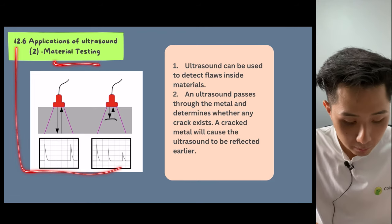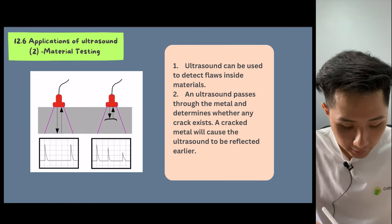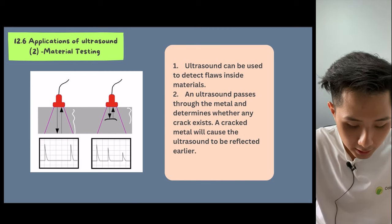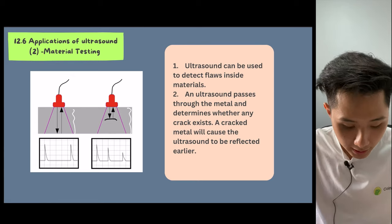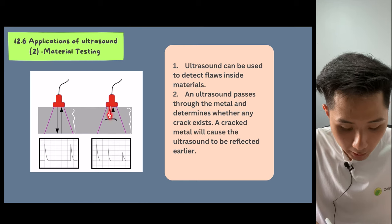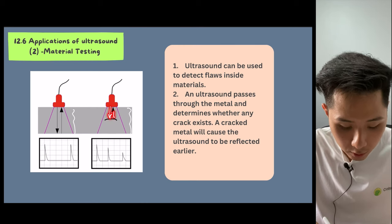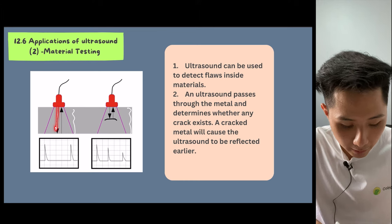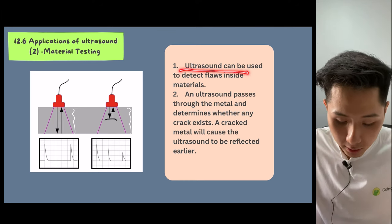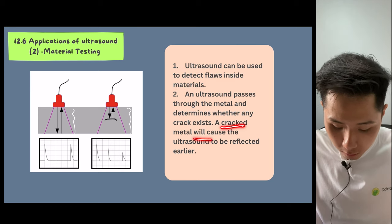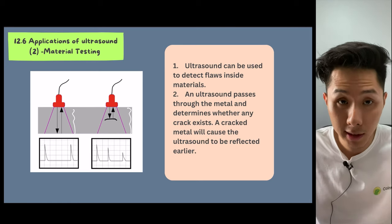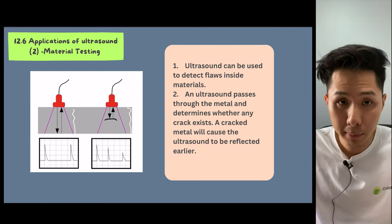The second application will be material testing. Here I have a material here. This is the non-crack region and this is a crack region. You can see that if the material is cracked, once we emit an ultrasound to the object, it will be reflected a lot quicker as compared to a normal material here. That's how ultrasound is used to detect flaws inside material. A cracked metal will cause ultrasound to be reflected earlier, and this allows engineers to know whether a material has been broken.